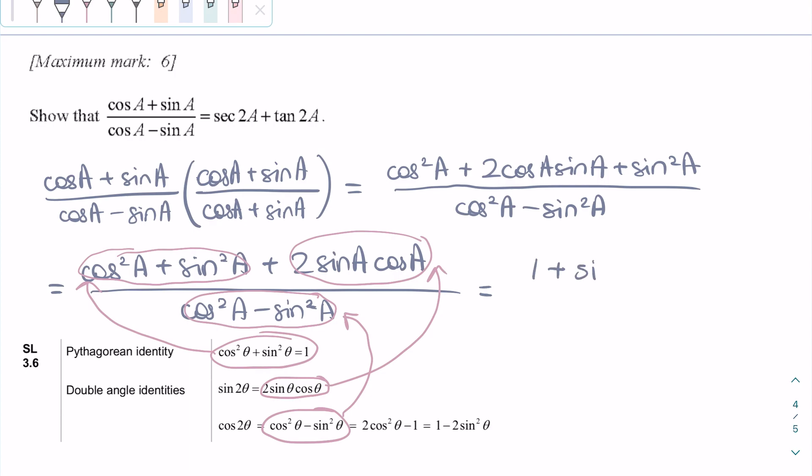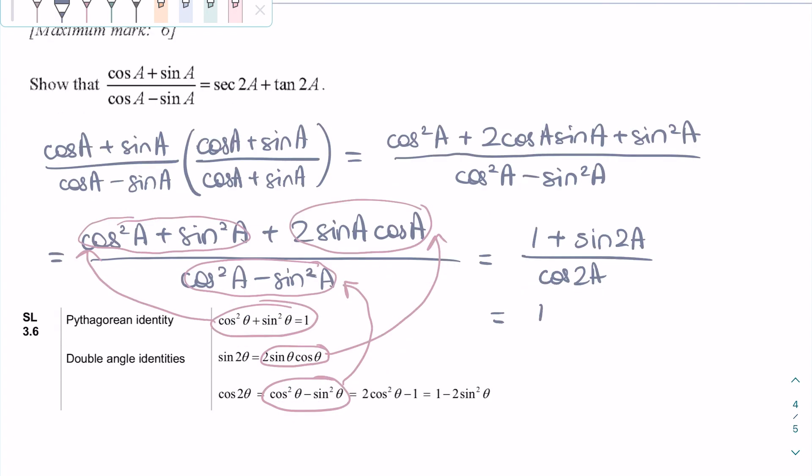This means we can rewrite the fraction as 1 plus sin 2a over cos 2a. We can then break apart the fraction into two fractions, so we get 1 over cos 2a plus sin 2a over cos 2a.